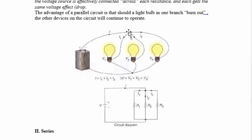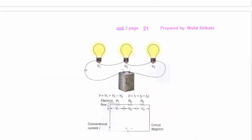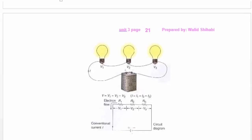One is parallel connection, where there is a junction in the circuit at which the current will split, and then merge again on the opposite junction before continuing to the negative terminal. The other is series connection, where the light bulbs are connected in series with no junctions. The current will not split — the current that comes from the positive terminal of the battery will be the same current that goes through every resistor.